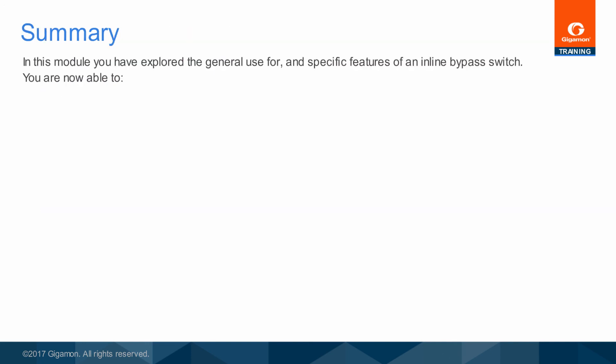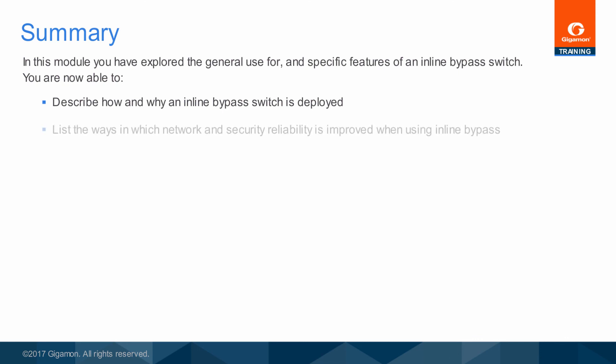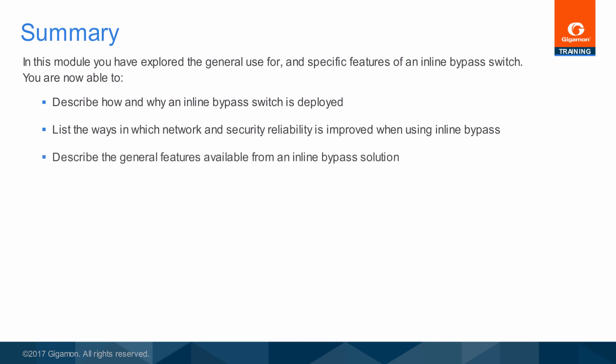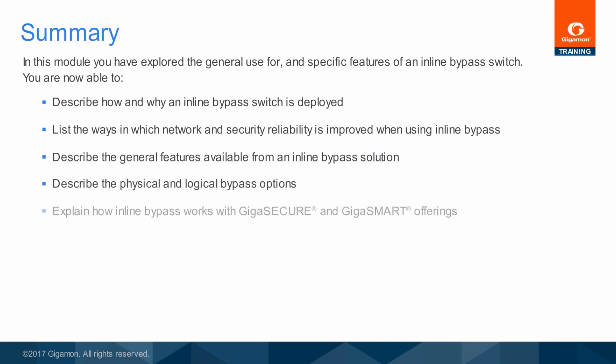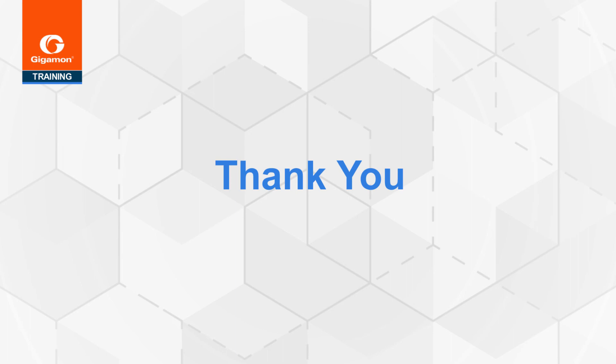In this module, you have explored the general use for and specific features of an inline bypass switch. You are now able to describe how and why an inline bypass switch is deployed, list the ways in which network and security reliability is improved when using inline bypass, describe the general features available from an inline bypass solution, describe the physical and logical bypass options, and explain how inline bypass works with GigaSECURE and GigaSMART offerings. This completes the inline bypass training module.